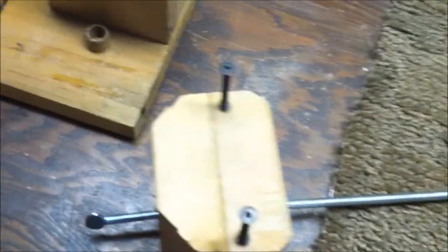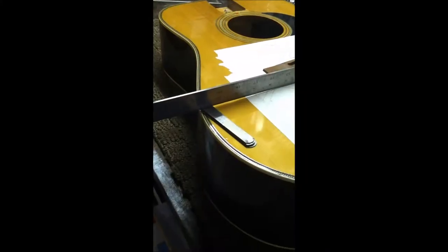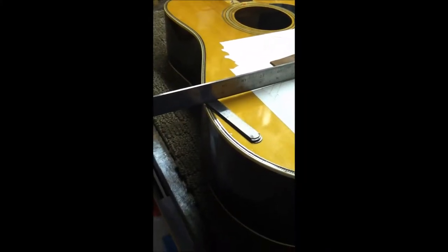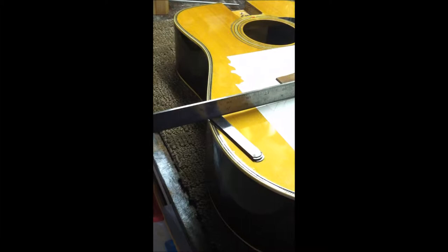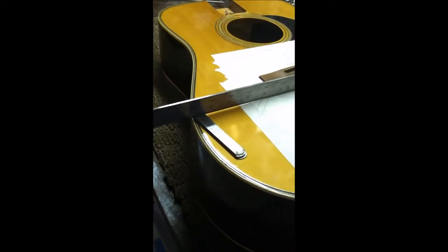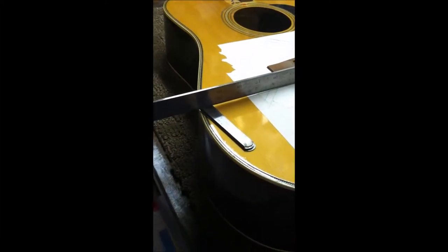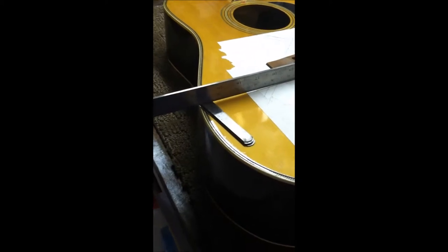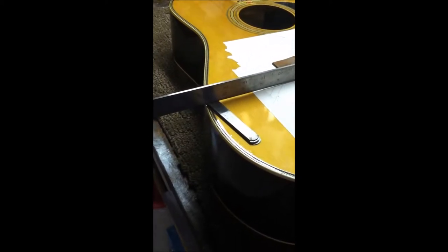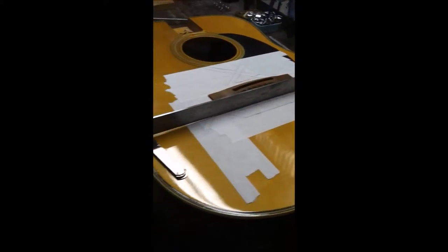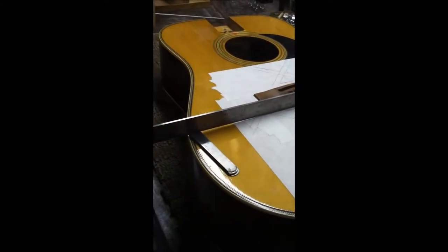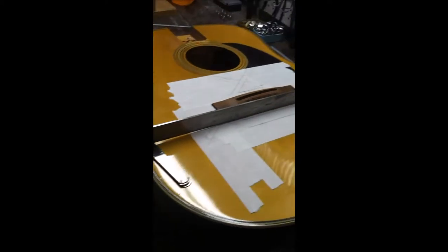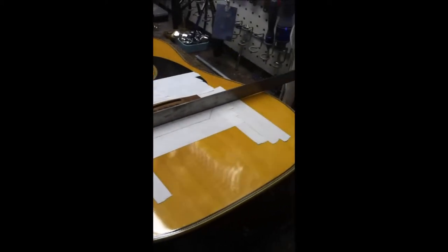I put feeler gauges under there with a straight edge. You can see where the gap is on each side. Those feeler gauges are stacked up at about 123 thousandths, roughly an eighth of an inch. I'll see how much flatter I can get that. With 12 strings it'll have a lot of pull, so I want to flatten it a bit more to compensate for that extra tension.